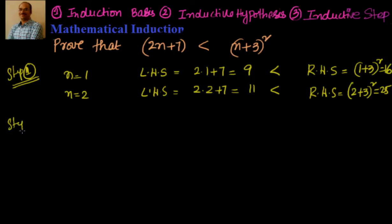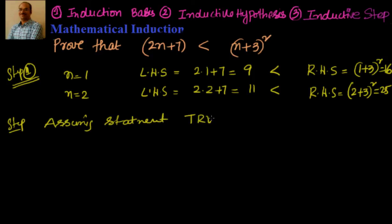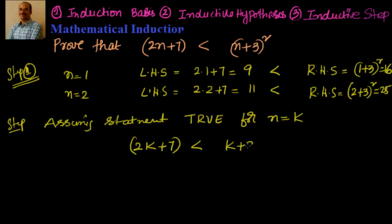Second step: we have to assume that the statement is true for n equal to k. Assuming statement is true for n equal to k, what we have to say is we have 2k plus 7 is less than k plus 3 whole square.